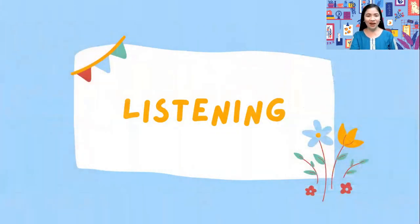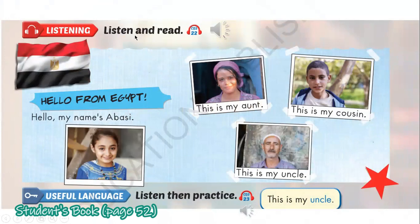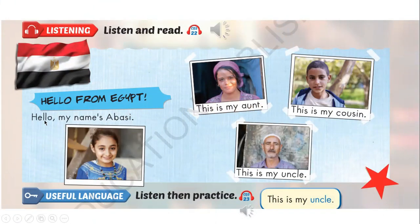Listening part. Listen very carefully, okay? Listen and read. Hello from Egypt. Hello. My name's Abbasi. 1. This is my aunt. 2. This is my cousin. 3. This is my uncle.